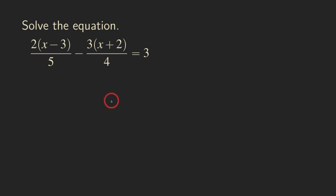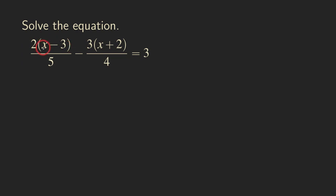Hello, everyone. Let's look at this equation with fractions here. This time we are having an equation with 2 times x minus 3. So that looks like there are two terms in there, but that's inside the parentheses — it's actually just one term, and then it's over the 5.